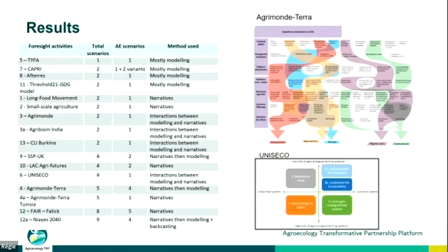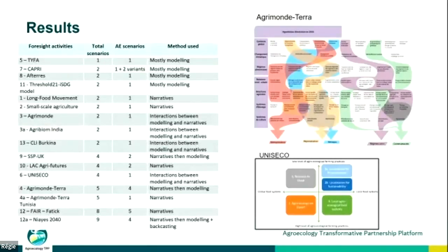Some key results: some foresight studies have only one scenario — for example TIFA on agroecology for Europe, which shows it is possible to feed Europe with an agroecology scenario. Others have two scenarios — a business-as-usual and an agroecology scenario. Others have three, four, or even nine scenarios. In Agrimonde Terra we had five scenarios, four of which had agroecological assumptions, meaning there is not only one pathway to agroecology but four. This is a very important message: we shouldn't focus on only one pathway but open the possibility of reaching agroecology through multiple routes.